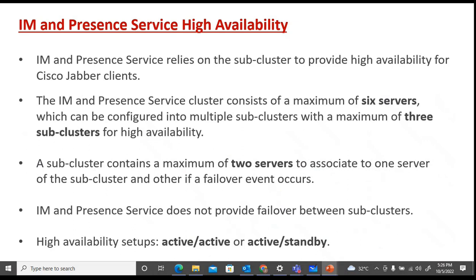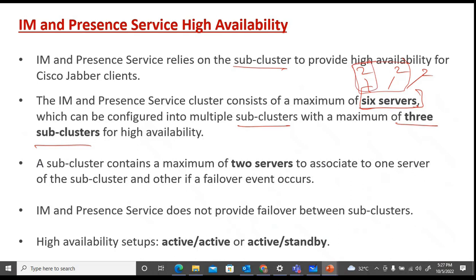For IM/Presence Service high availability, IM/Presence relies on subclusters to provide high availability for Jabber clients, since only one IM/Presence cluster can integrate with a CUCM cluster. The IM/Presence Service cluster consists of a maximum of six servers, which can be configured into multiple subclusters — up to three subclusters, with a maximum of two servers per subcluster. A subcluster contains a maximum of two servers: one primary and one as failover or backup.